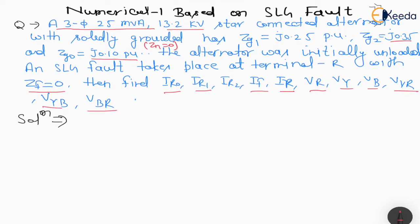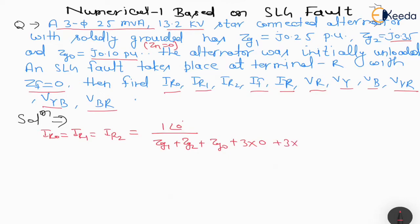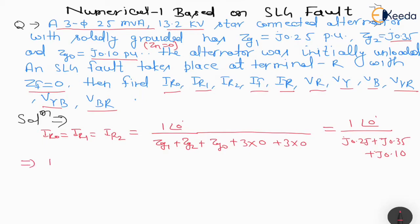Starting from the formula directly, we know that IR0 = IR1 = IR2 = 1∠0° / (Zg1 + Zg2 + Zg0 + 3·Zn + 3·Zf). Since Zn = 0 and Zf = 0, putting all values: 1∠0° / (J0.25 + J0.35 + J0.10). So we get IR0 = IR1 = IR2 = -J1.4285 per unit.